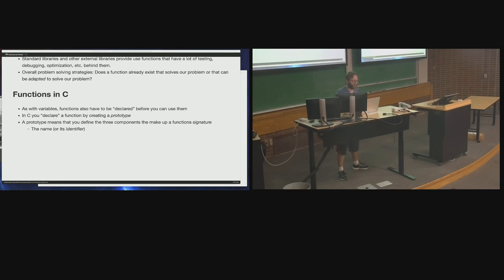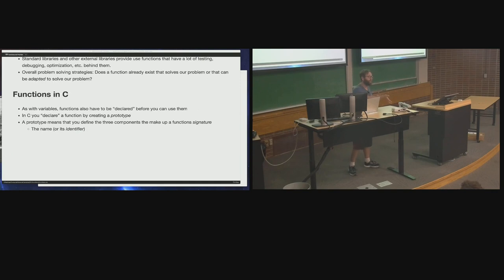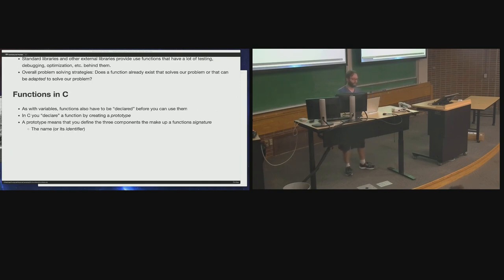A prototype defines the three components that make up a function's signature. Just like in real life when you sign something, you're identifying it. A signature identifies: the function's name or identifier, its inputs or parameters, and its output type. We're not going to go the math route of f of x, g of x, h of x — we want to call our functions what they do. And because they do something, generally you're going to give them verb names. Variables are nouns, so they get noun names. Functions do things, so they get verb names.